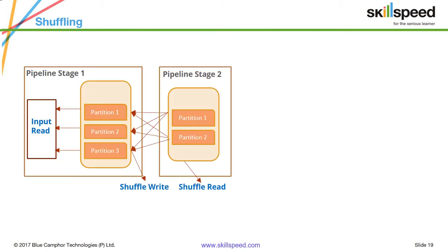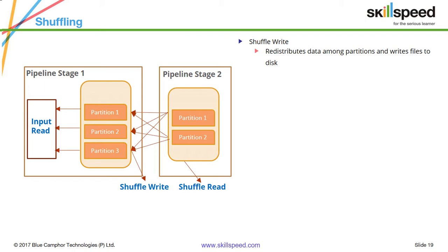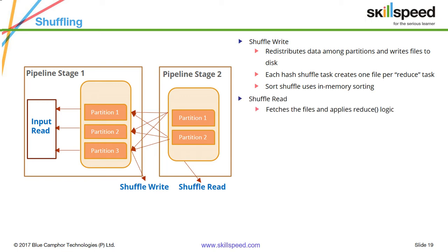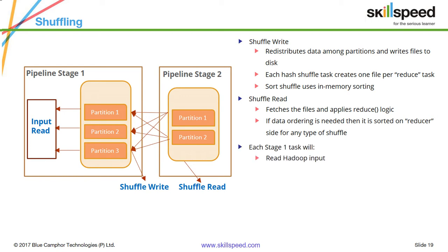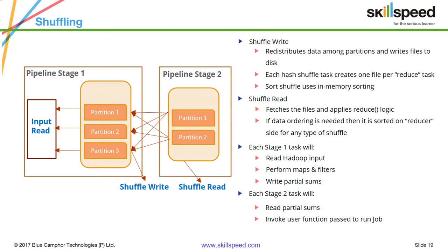Let's have a look at the shuffling process. You can see the original RDD before shuffling, and after the shuffling stage there are only two partitions. There is shuffle write and shuffle read. In shuffle write, data is redistributed among partitions and written to disk — each hash shuffle task creates one file per reduce task, using in-memory sorting. The shuffle read fetches the files and applies the reduce logic. If data ordering is needed, it is sorted on the reducer side. In Stage 1, each task reads the Hadoop input, performs map and filters, and writes partial sums; in the shuffle, it reads partial sums and invokes the user function passed to run the job.